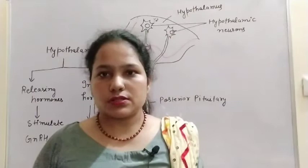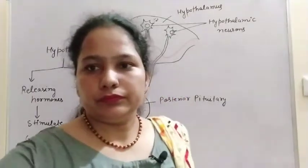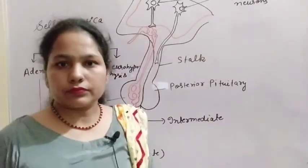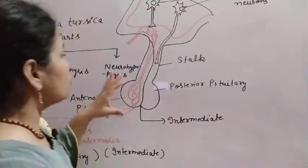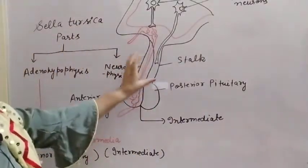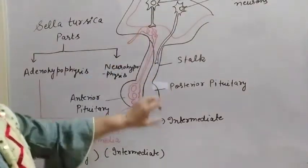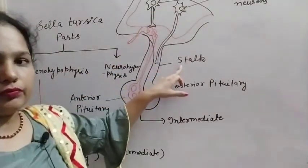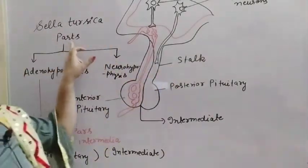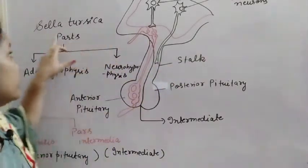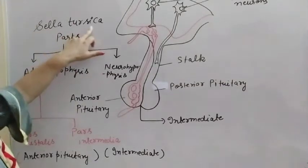Now let us discuss the pituitary gland. The pituitary gland is attached to the hypothalamus with a stalk, and it is present in a bony cavity. That bony cavity is known as the sella turcica.